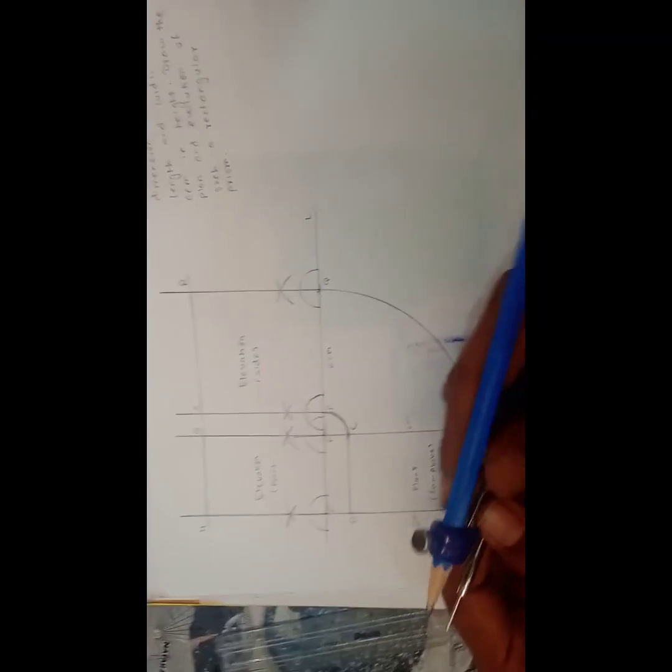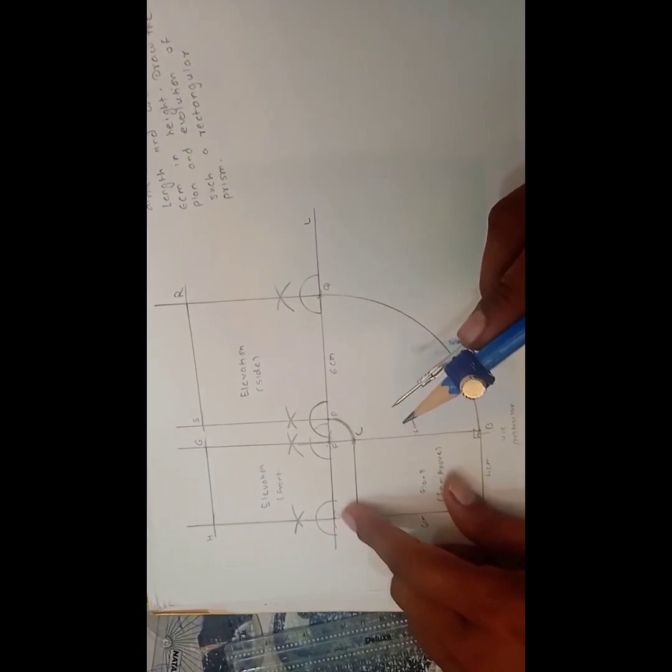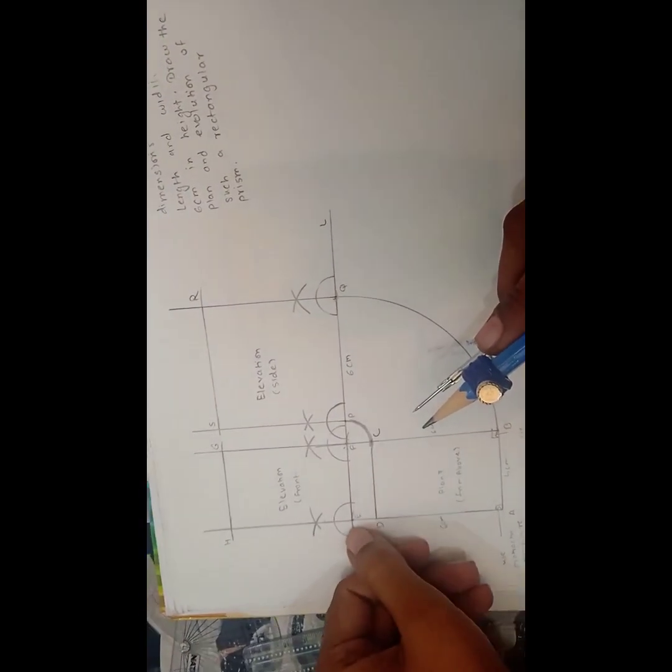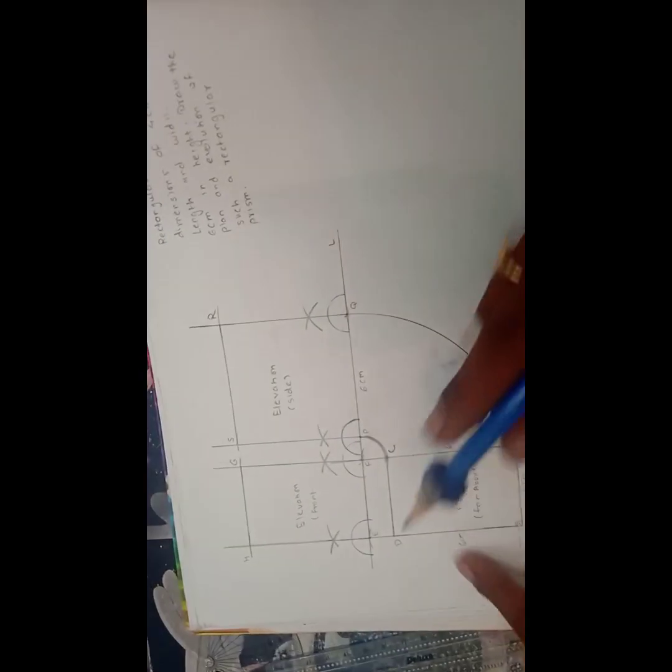We have the 4 semicircles. Now we want to bisect the point E. We want to find out the bisector of the at point E, F, P and the Q. How to do this?